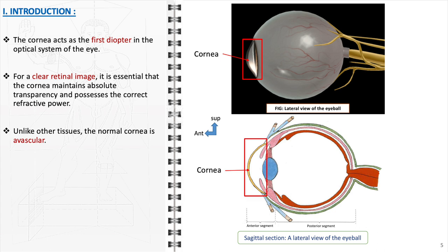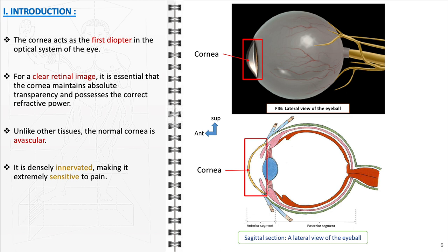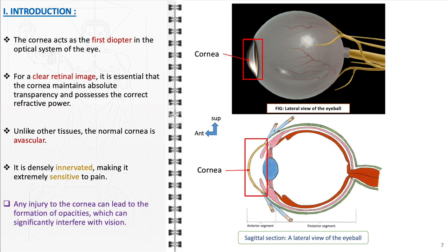Despite its lack of vasculature, the cornea is densely supplied with nerve fibers, making it one of the most sensitive tissues to pain. Consequently, any damage to the cornea, such as scratches or abrasions, can result in the formation of opacities or clouding. These opacities can obstruct or distort vision by interfering with the passage of light through the cornea, emphasizing the importance of its integrity for clear vision.